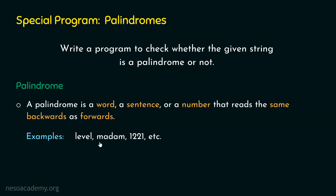Similarly, if we read this word from left to right, we will get 'madam.' If we read this word from right to left, then also we will get 'madam.' Also, if we read this number from left to right, we will get 12321. If we read this number from right to left, then also we will get 12321. So these are all palindromes.